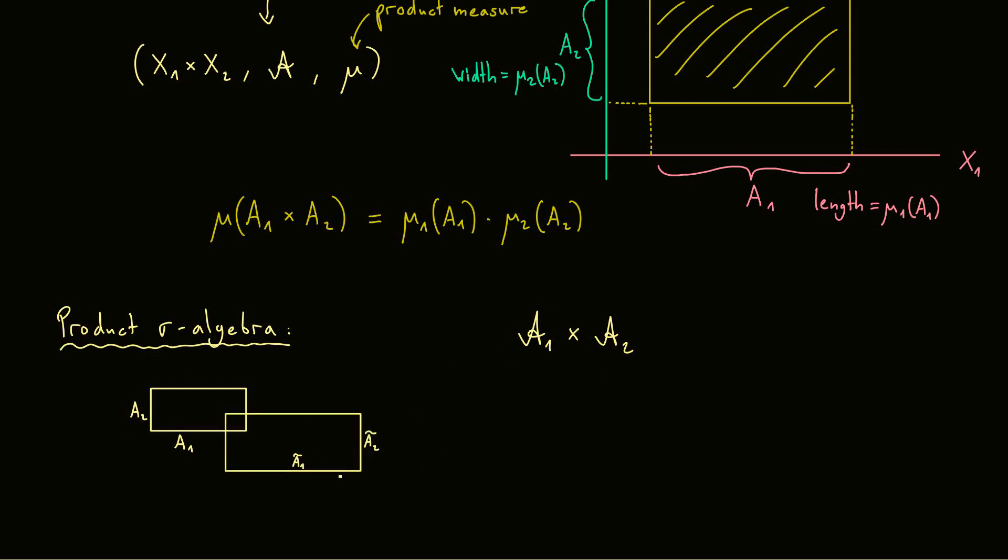However we immediately see that the rectangles don't form a sigma algebra. Because we can just take another one here with different measurable sets A1, A2. And then we see that the union is not a rectangle. Hence we don't have a sigma algebra. But we still have a semi-ring of sets.